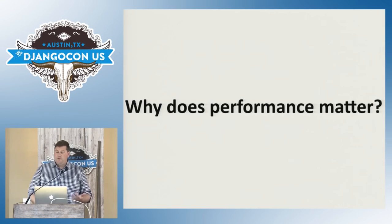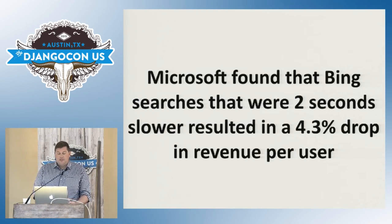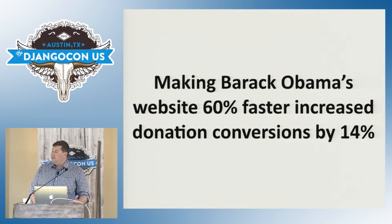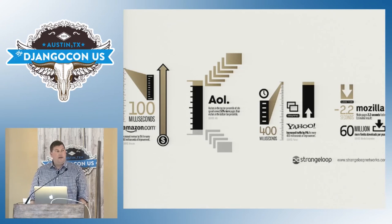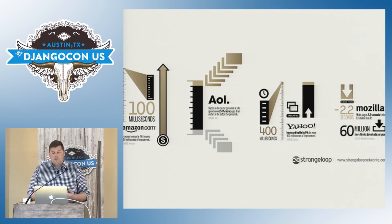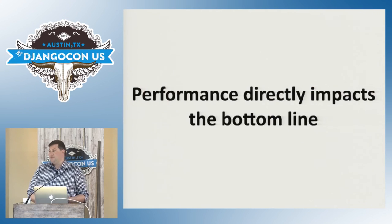Why does performance matter? Microsoft found that Bing searches that were two seconds slower resulted in a 4.3% drop in revenue per user. When Mozilla shaved 2.2 seconds off their landing page, Firefox downloads increased 15.4% — that's 60 million more downloads just because the page was faster. Making Barack Obama's website 60% faster increased donation conversions by 14%. Most impressively, decreasing Amazon.com's end-user latency by 100 milliseconds results in a 1% improvement in revenue. All these major engineering organizations understand that performance directly impacts the bottom line.